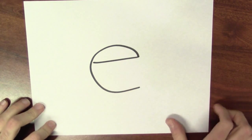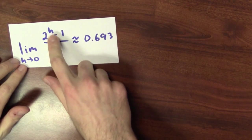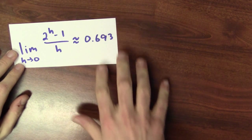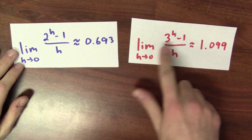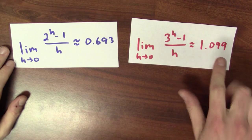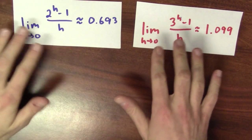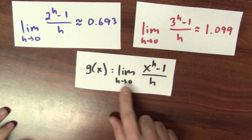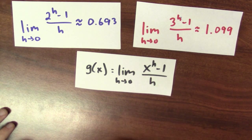We're not really succeeding in writing down a function which is its own derivative. Let's introduce a new friend, the number e, to help us. Here's how we're going to get to the number e. The limit of 2 to the h minus 1 over h as h approaches 0 is about 0.69. On the other hand, the limit of 3 to the h minus 1 over h as h approaches 0 is a little bit more than 1 — it's about 1.099.